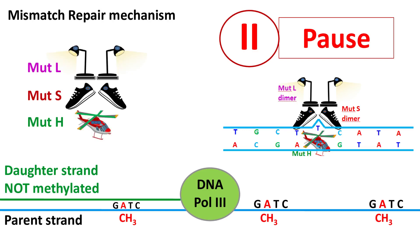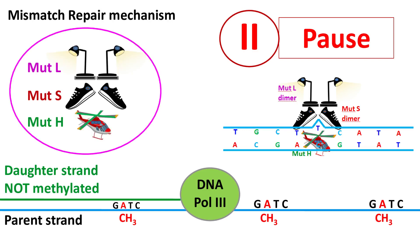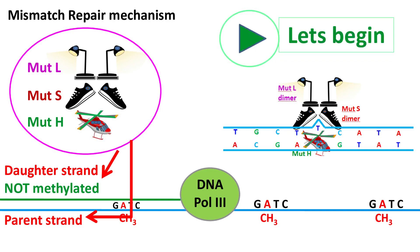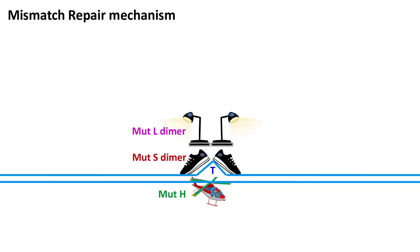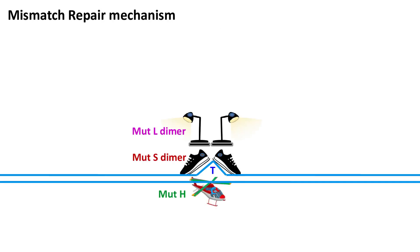The enzymes involved in mismatch repair can recognize the methylated and unmethylated strands, meaning they can actually recognize the parent and the daughter strand. Now, back to the mismatch repair mechanism — the MUT-H protein acts as a type 2 endonuclease.